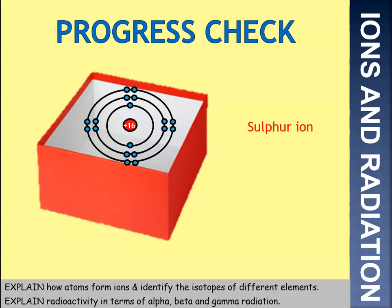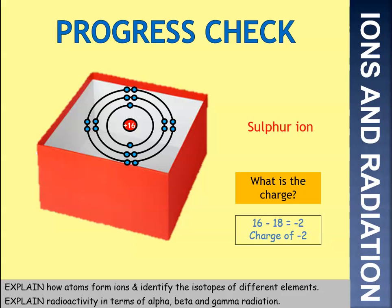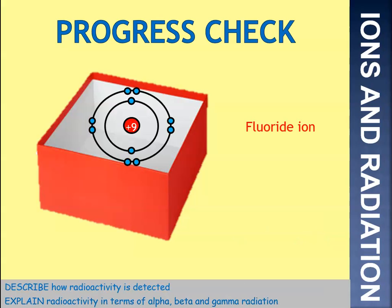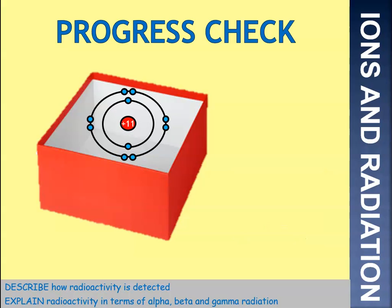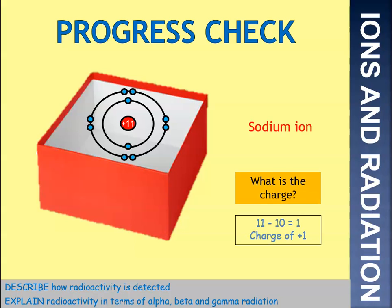We've got a sulphur ion here — it's got 16 positives. Count the negatives: it's got 18 negatives. So 16 take away 18 gives us minus two. We have a fluoride ion — it's got a charge of plus nine in the centre, and ten electrons on the outside. Nine minus ten gives us minus one, so overall charge is minus one. We've got a sodium ion — that's got 11 positives in the centre. It's got ten negatives. 11 take away ten leaves us with one, so it's got a charge of plus one overall.